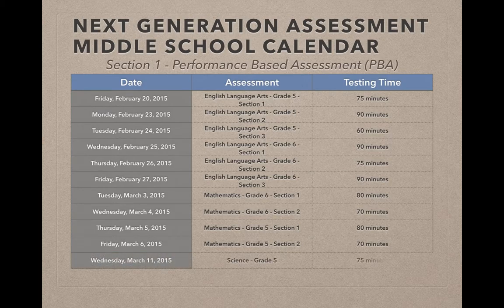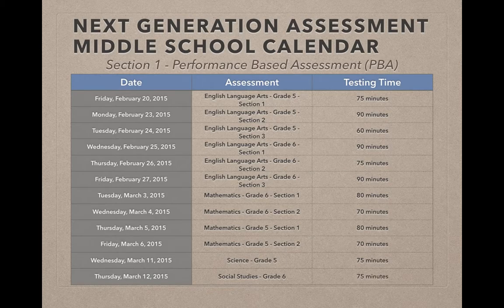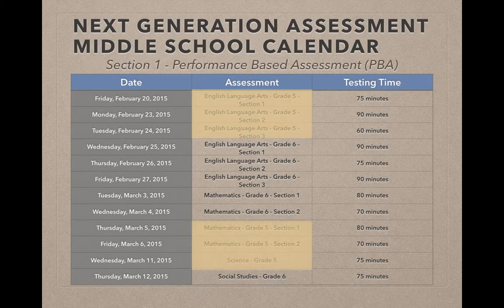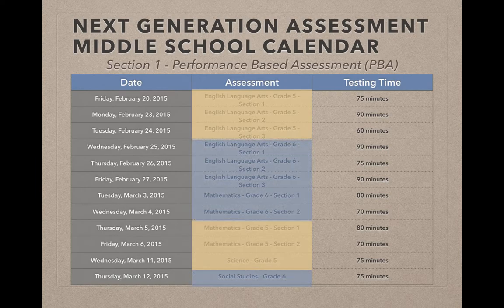The following week, Wednesday March 11th will have Science Grade 5, and Thursday March 12th will have Social Studies Grade 6. So if we break this down by grade level, our 5th graders are going to have six days worth of testing, and our 6th graders will also have six days worth of testing.